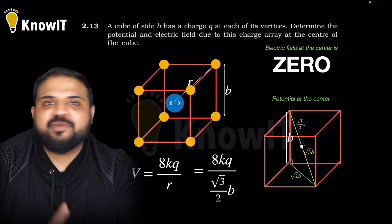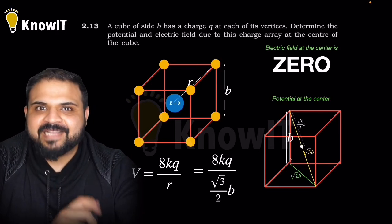So here the challenging thing was finding r. Now put this value directly and you will get the answer in terms of b distance as given in the question. I hope you have got this question too.